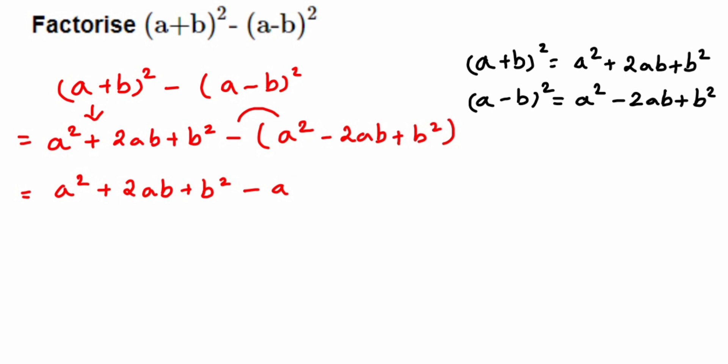This step is very important: minus into minus is plus, so we'll get plus 2ab. Similarly, minus into plus is minus, so we'll get minus b². If you look at the question here, we can cancel few terms.